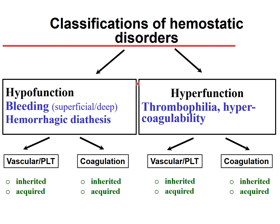In both major cases we can have vascular or platelet disorders, which can be inherited or acquired, as well as coagulation abnormalities that can also be inherited or acquired. Similarly, hyperfunction can be caused by vascular, platelet, or coagulation disorders, and again we have inherited and acquired forms.